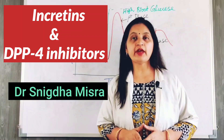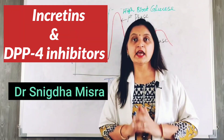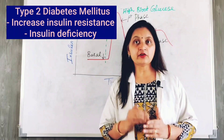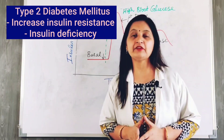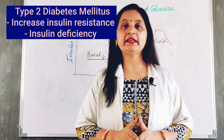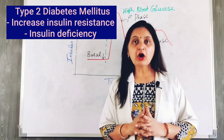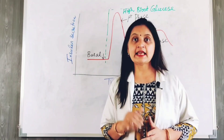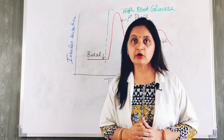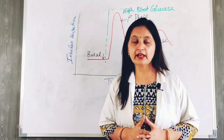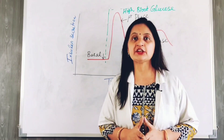Type 2 diabetes mellitus is prevalent in obese individuals and is associated with increased insulin resistance and a gradual decline in insulin secretion due to dysfunction of the pancreatic beta cells over time, leading to deficiency of insulin. Because of this deficiency, there is elevated blood glucose level, increased glycosylated hemoglobin, and dysregulation of carbohydrate and lipid metabolism in a diabetic individual, leading to various complications.